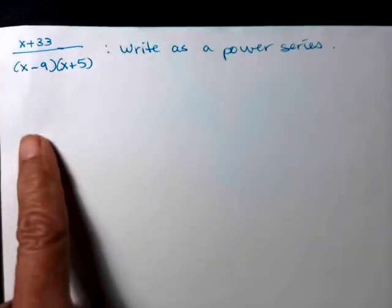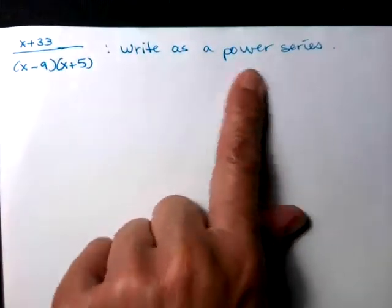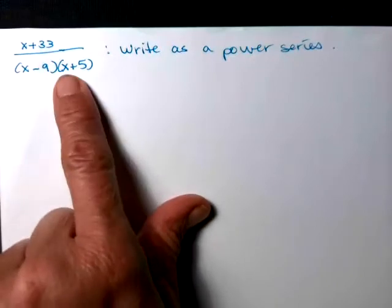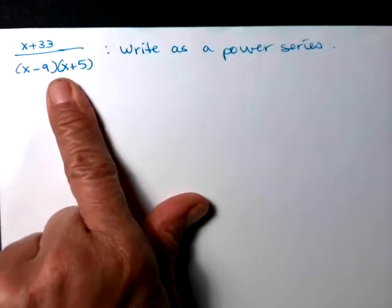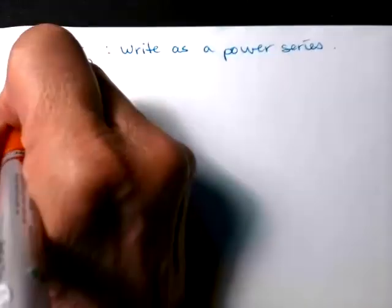So here's an example of how you can take a rational function and write it as a power series. The first thing we want to do is break this down into partial fractions. So we'll go ahead and grab a different color so it kind of stands out. Let's find our partial fractions.